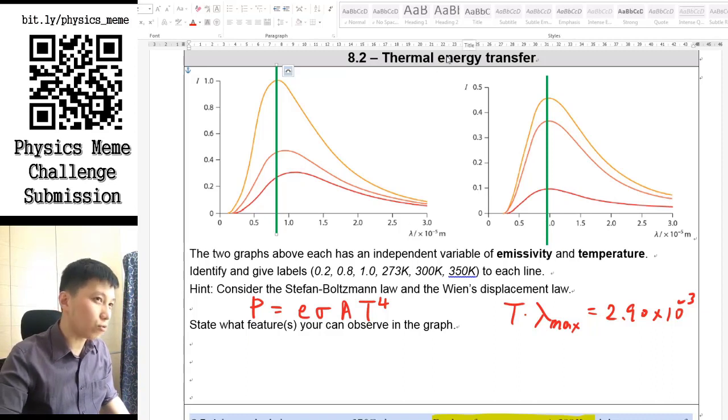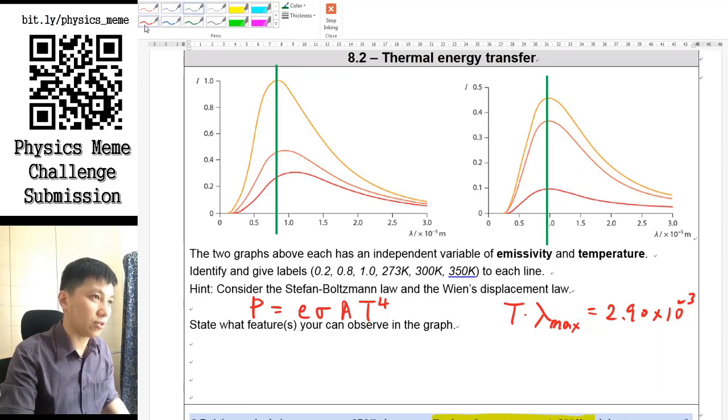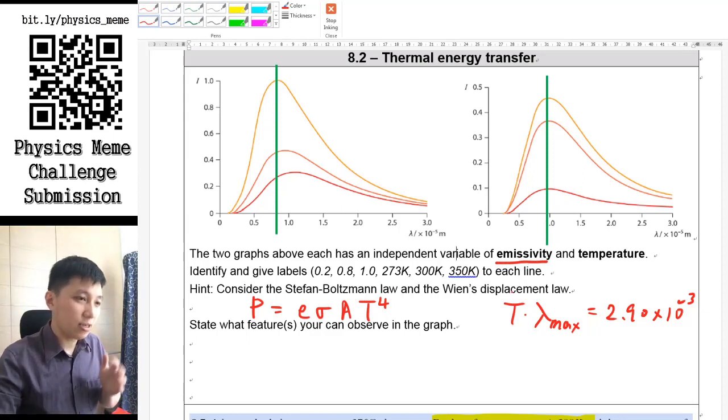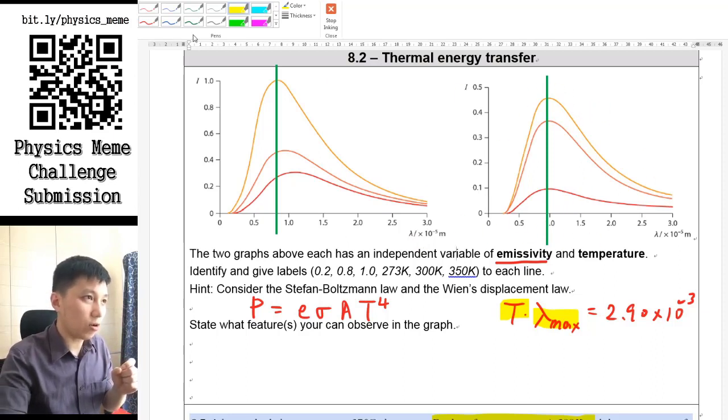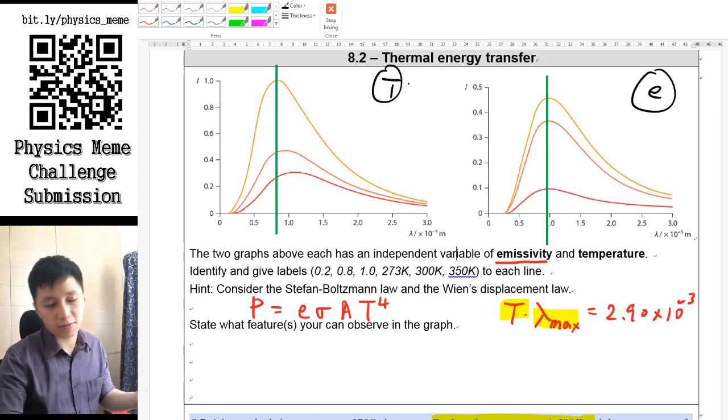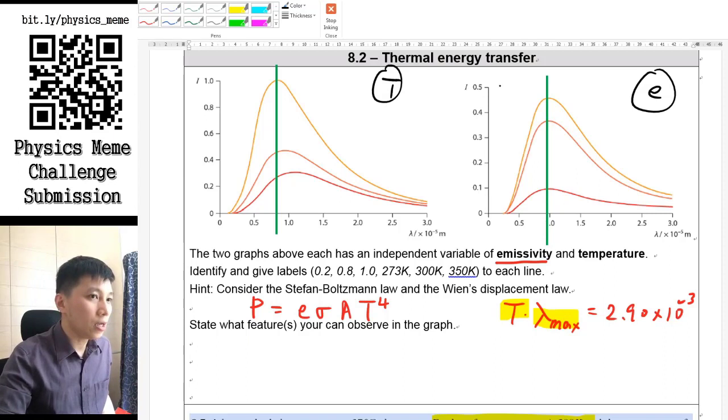If that is the case, then you should be able to identify which one is changing the temperature, which one is changing the emissivity. When we say changing emissivity, I assume that temperature doesn't change. If temperature doesn't change according to Wien's displacement law, then the peak of the curve doesn't change as well. So the right is only changing emissivity, and the left is about changing temperature.